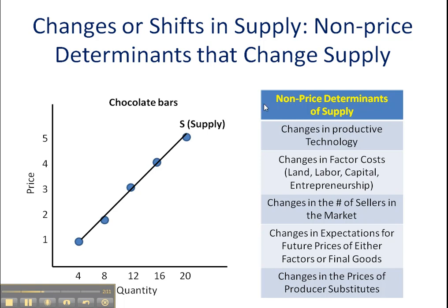The first is changes in productive technology — the technology that firms implement in order to supply. If we have an improvement in that technology, then they will be able to increase their production at every single price level in the market.